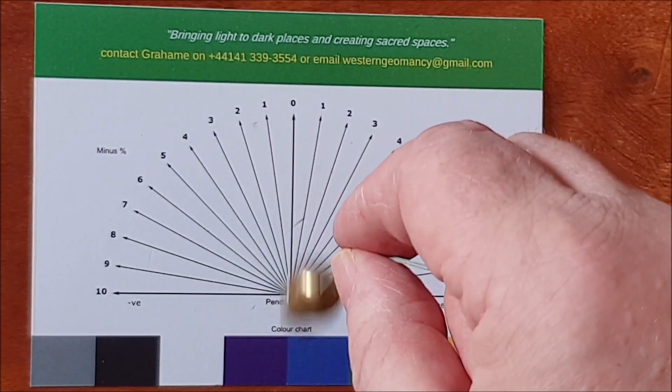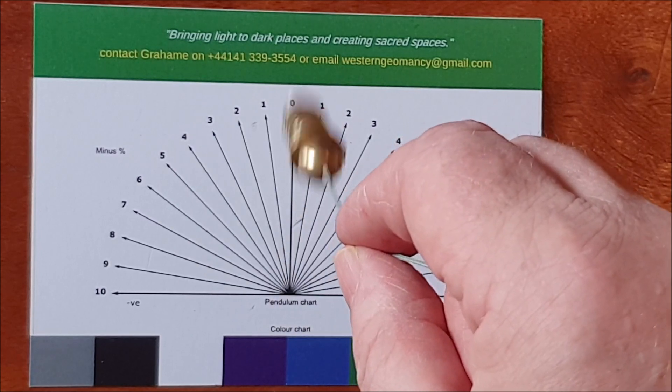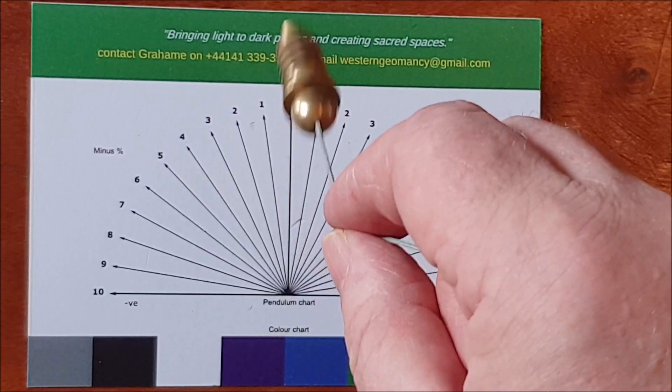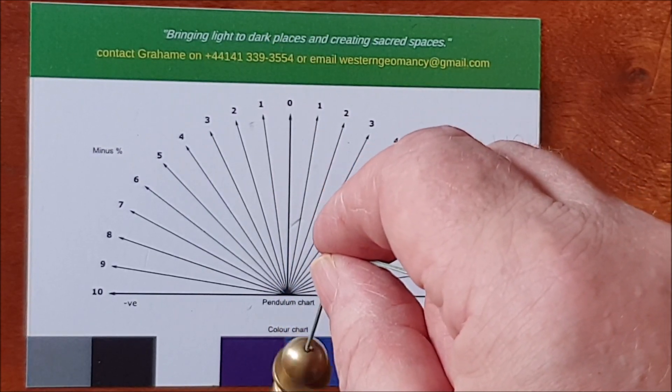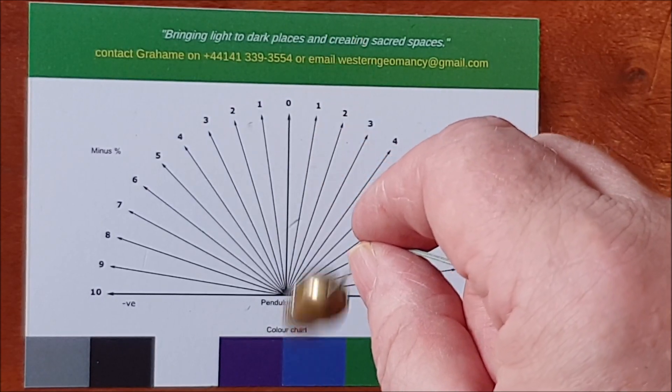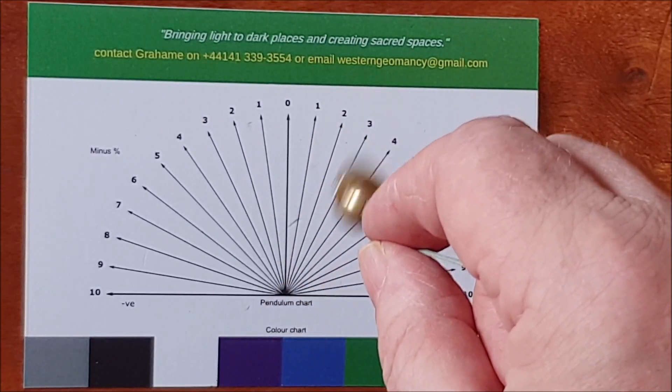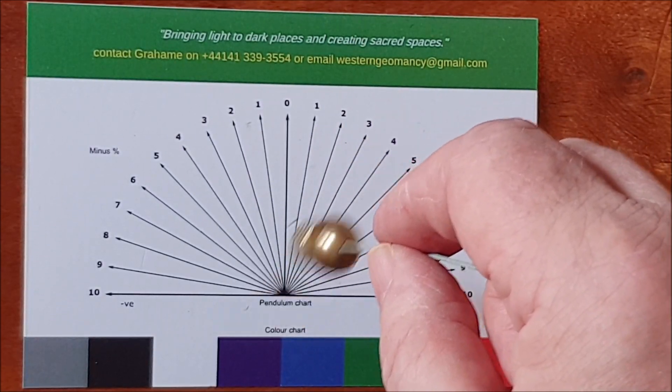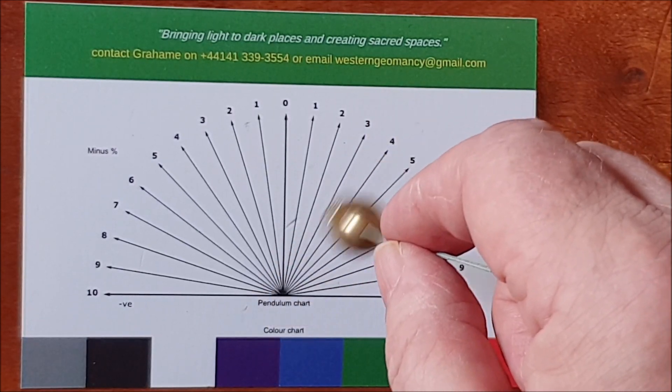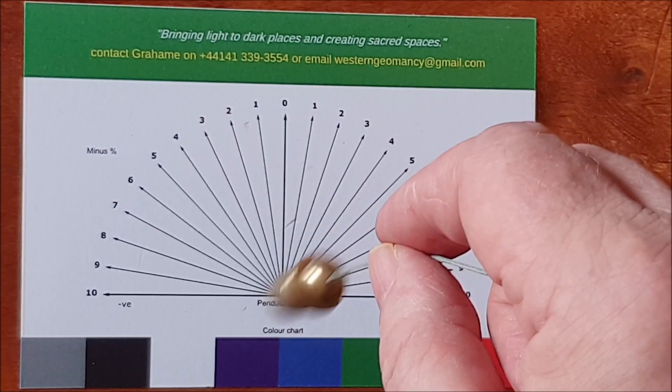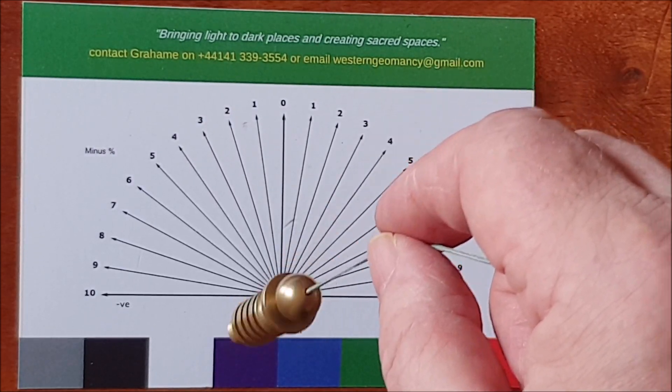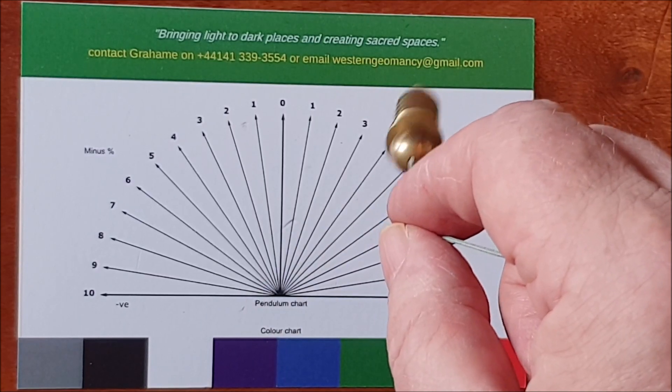If I want to assess the quality of a vial of water, I can say pendulum please show me on a percentage scale the purity of this water. The pendulum will then start swinging still in a straight line but you see it will go up to one of these sectors. It takes a little bit of practice because you're used to your pendulum usually going clockwise or anti-clockwise to indicate yes or no, so you have to get used to it just going in a straight line.